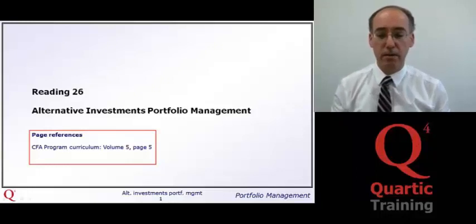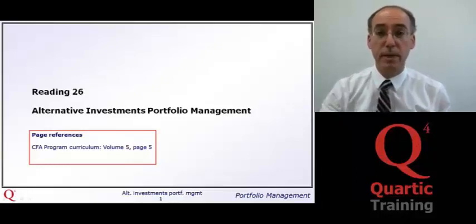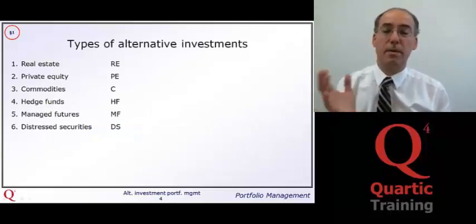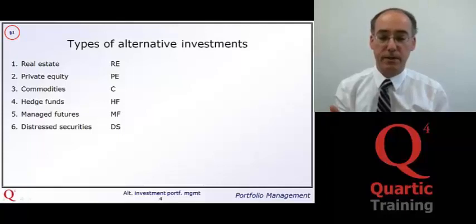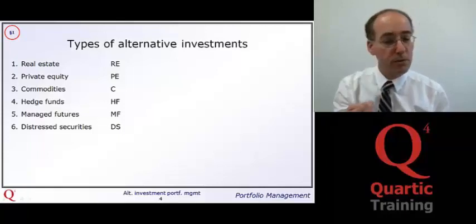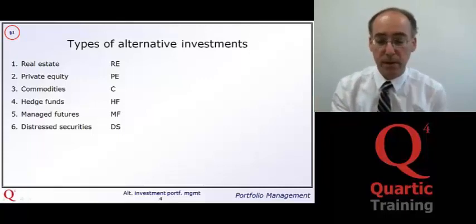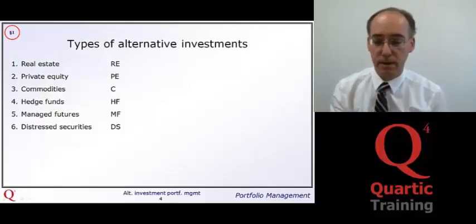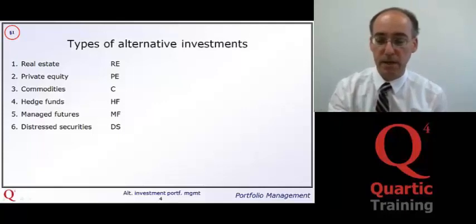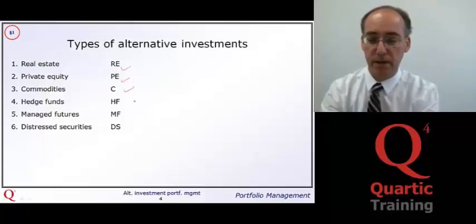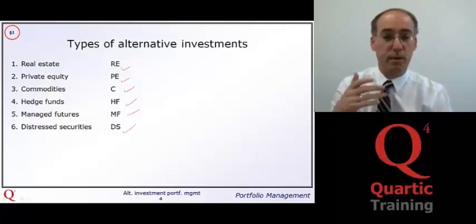Welcome to the reading on alternative investments portfolio management. On this chart we see a number of different types of alternative investments. They are introduced here with their abbreviations, which we will use further on. These include real estate, private equity, commodities, hedge funds, managed futures, and distressed securities — these are the alternative investments we are looking into.